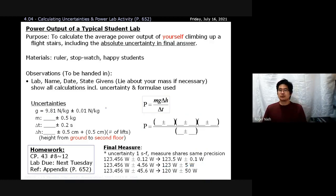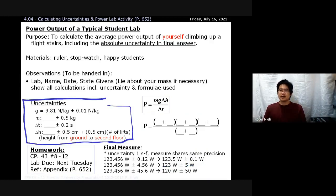List all your measurements with their given uncertainties together — for example, mass equals a number plus or minus 0.5 kilograms — just as they are listed on the screen.